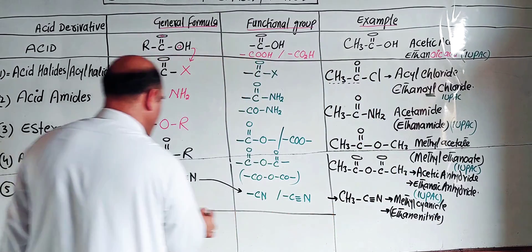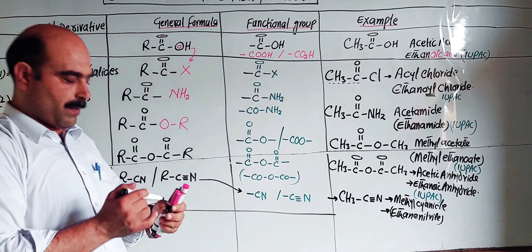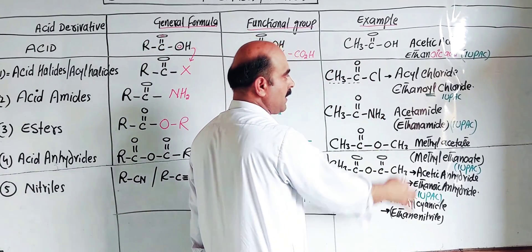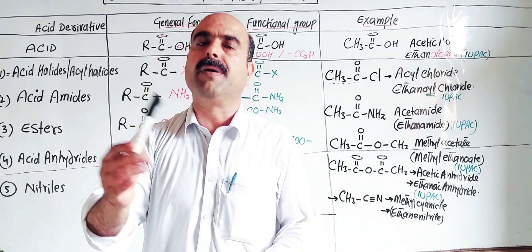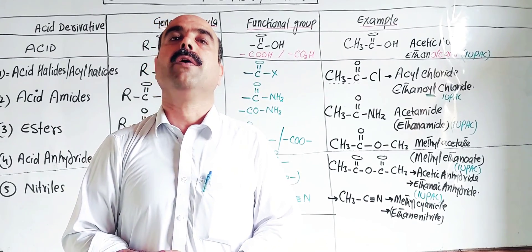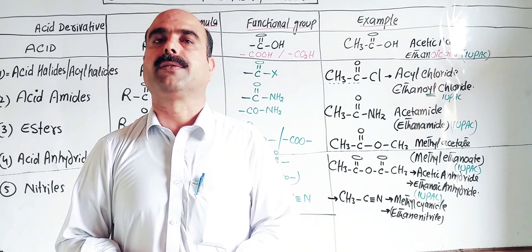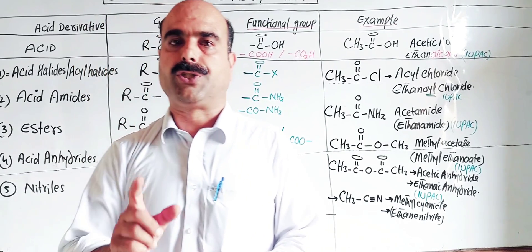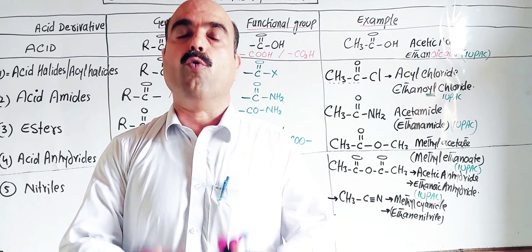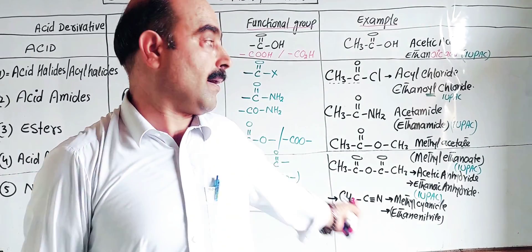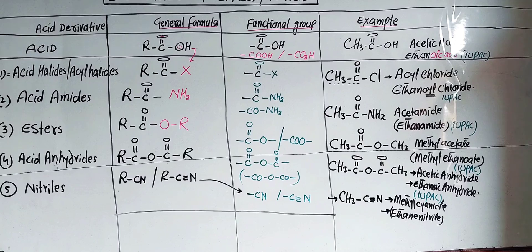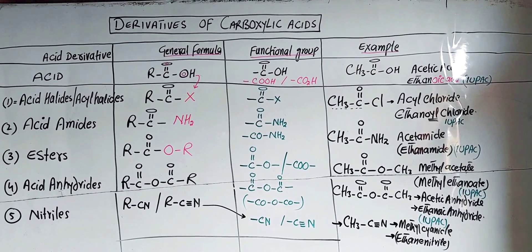So students, these were all the derivatives of carboxylic acids — their general formulas, functional groups, examples, common names, and IUPAC names. I have more detailed videos on how to name these compounds and their preparation reactions. Thanks a lot for watching. Please like and share the video and inform your fellow students about this channel to get maximum benefit.